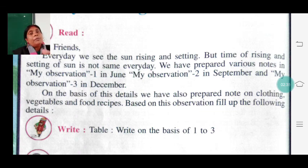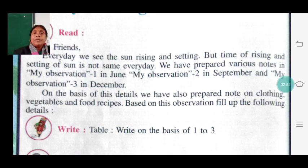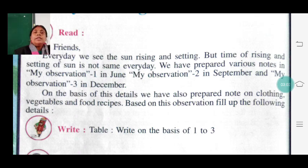In the month of June it is very hot, so we used to wear very light cotton clothes. But nowadays in winter, see how many clothes we are wearing — one inner, one sweater, one shawl — all due to the change of season. Accordingly, you have to write the type of food you are taking and what type of clothing you are using during this time.